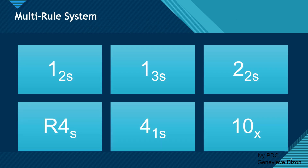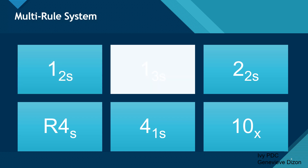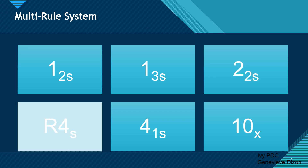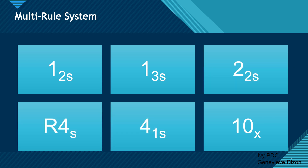There are six common rules in the multi-rule system: the 1-2-S, 1-3-S, 2-2-S, R-4-S, 4-1-S, and the 10-X or 10-Mean.